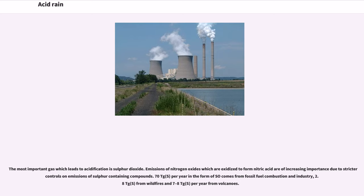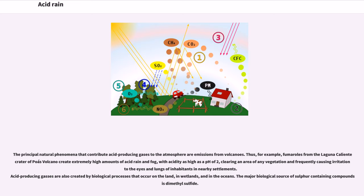The most important gas which leads to acidification is sulfur dioxide. Emissions of nitrogen oxides, which are oxidized to form nitric acid, are of increasing importance due to stricter controls on emissions of sulfur-containing compounds. Approximately 70 Tg per year in the form of SO2 comes from fossil fuel combustion and industry, 2.8 Tg from wildfires, and 7–8 Tg per year from volcanoes. The principal natural phenomena that contribute acid-producing gases to the atmosphere are emissions from volcanoes. For example, fumaroles from the Laguna Caliente Crater of Poás volcano create extremely high amounts of acid rain and fog, with acidity as high as a pH of 2, clearing an area of any vegetation and frequently causing irritation to the eyes and lungs of nearby inhabitants.